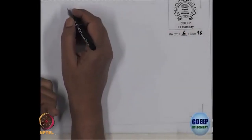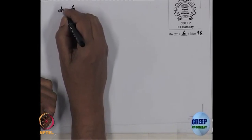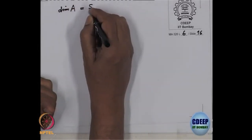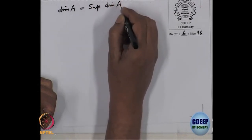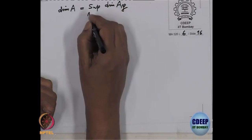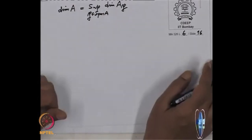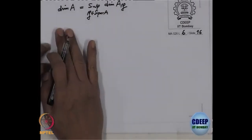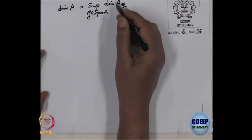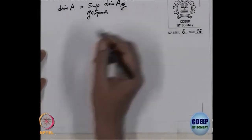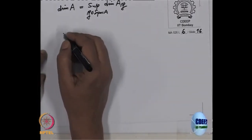So remember, for an arbitrary ring A, the Krull dimension of A — we have seen it is a supremum of dimensions of A localized at P. This supremum is running over prime ideals. So in order to compute or understand this, one wants to concentrate on each localization. Therefore, from some time onward, we will concentrate on local rings.